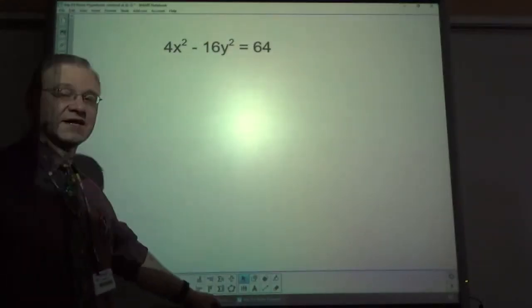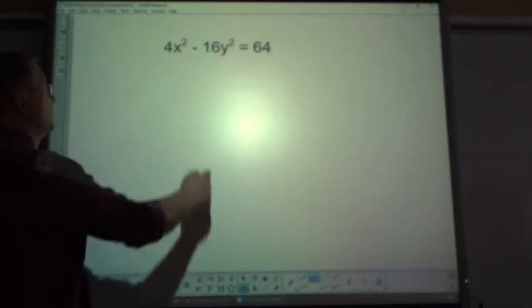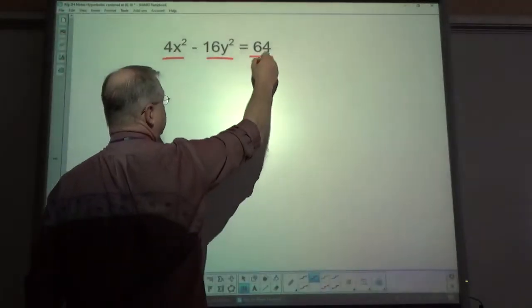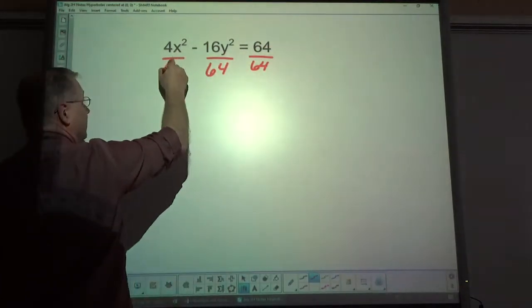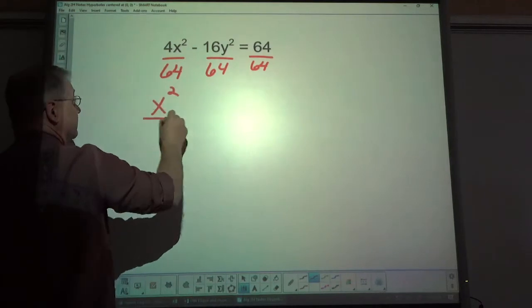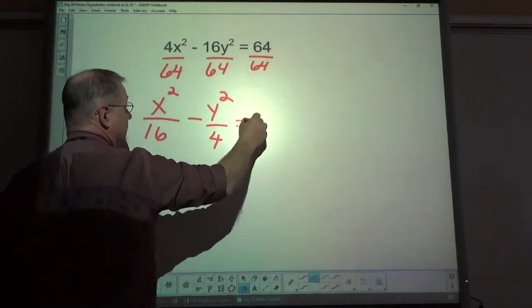What if it's not set in standard form? Well, make it in standard form. Divide by 64. Because this side has to equal 1. x squared over 16 minus y squared over 4 equals 1.